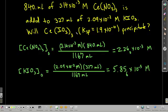Let's look at an example. Suppose we take two beakers. In one beaker, we have 840 milliliters of 3.14 times 10 to the minus 3 molar cerium 3 nitrate. And we have another beaker, we have about 327 milliliters of 2.09 times 10 to the minus 2 molar potassium iodate. And we mix them together. We want to know, will any cerium 3 iodate precipitate out? And this is the Ksp for cerium 3 iodate.